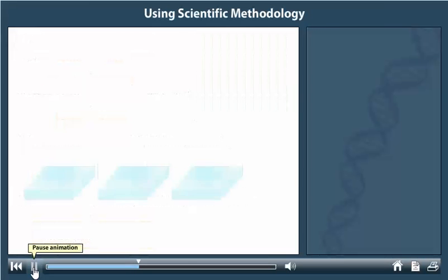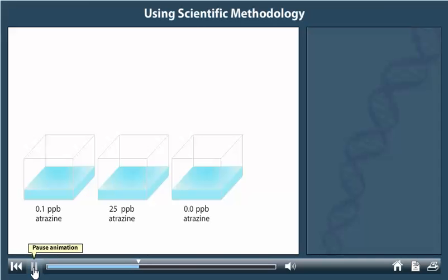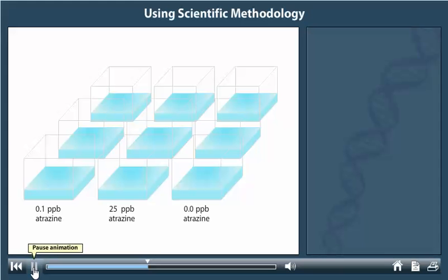Hayes and his associates established tanks in which all attributes were held constant except the water's atrazine concentrations: 0.1 parts per billion atrazine, 25 parts per billion atrazine, and no atrazine. Each condition was replicated in three tanks, for a total of nine tanks.